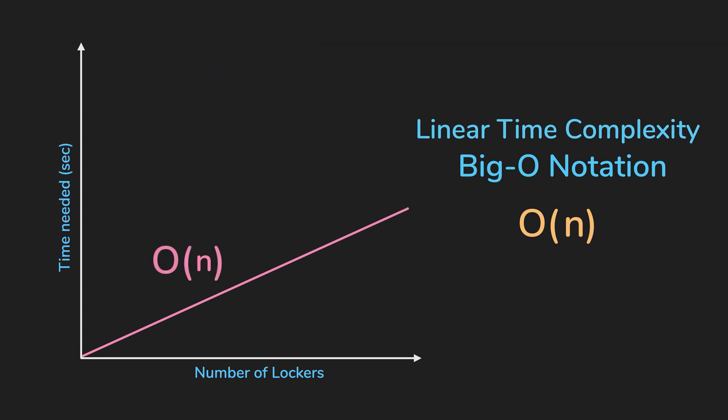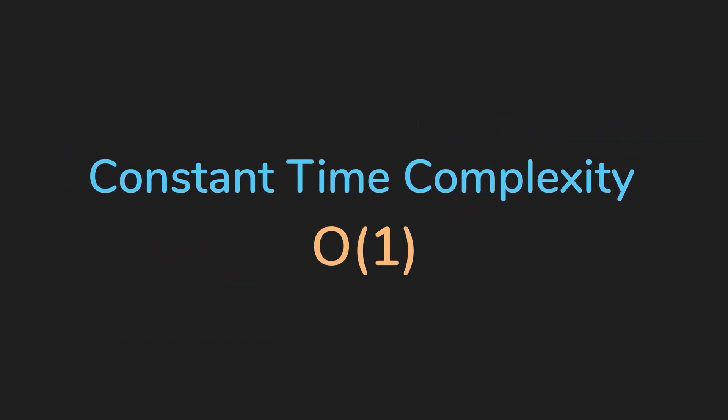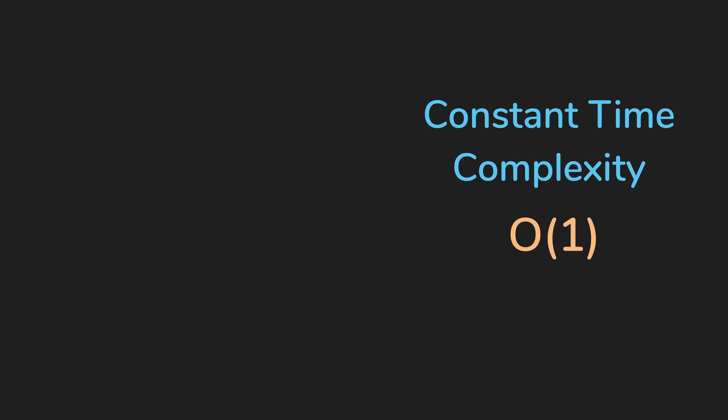Now let's look at another complexity, which we call constant time, O of one. Algorithms with constant time are considered to be good because no matter how large the input gets, it will still take the same time to perform a certain task.